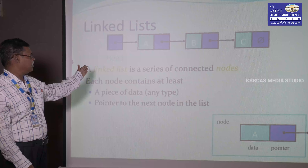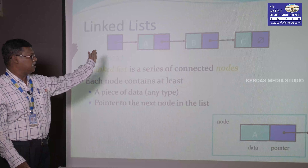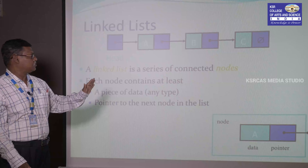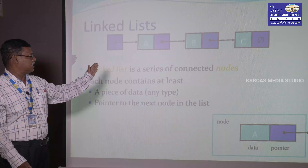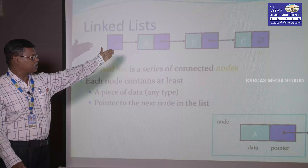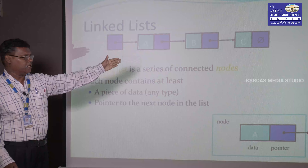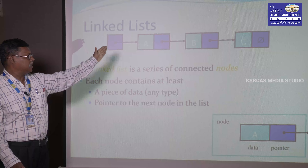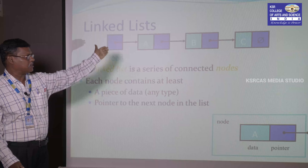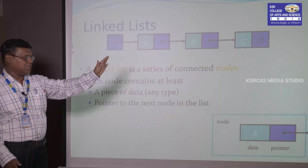This is a simple example of a linked list. Here we have a head node, which contains only a pointer pointing to the first node. We have three data elements stored: the first node stores A, the second node stores B, and the final node stores C. Node A points to B, B points to C, and the last node contains a null link.